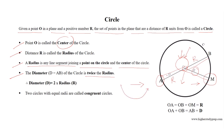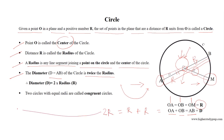For this circle, the diameter AB equals D, where AB equals OA plus OB. Since OA equals OB equals OM equals R, we get D equals R plus R, which equals 2R. So the diameter of the circle equals 2 times the radius. Two circles with equal radii are called congruent circles.